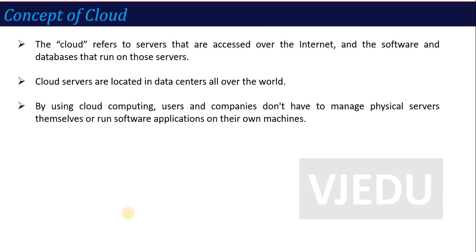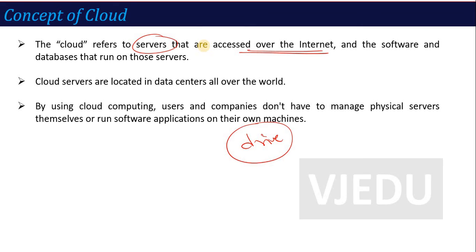The next and last topic of this unit is the concept of cloud. Cloud refers to the servers that are accessed over the internet. For example, in Gmail we have a drive option — we save our data on the drive. That drive is a sort of cloud, because cloud servers are not on our personal or physical machine. Cloud is a place on the internet where you save your data, run your applications, run data, and run software. That is the concept of cloud.